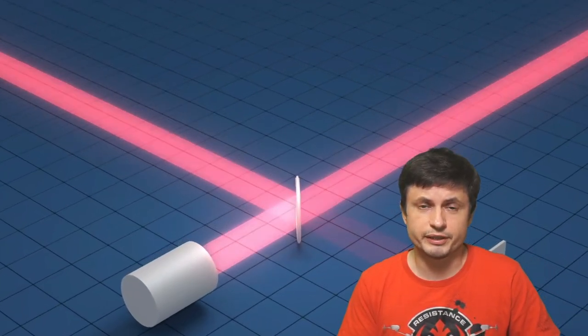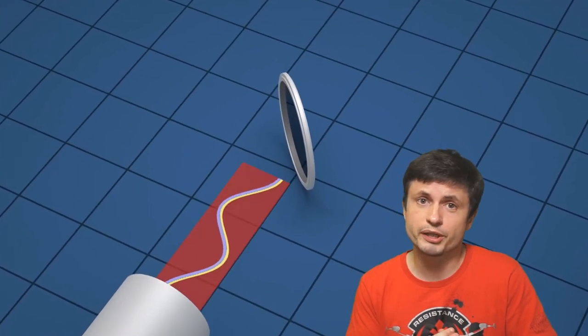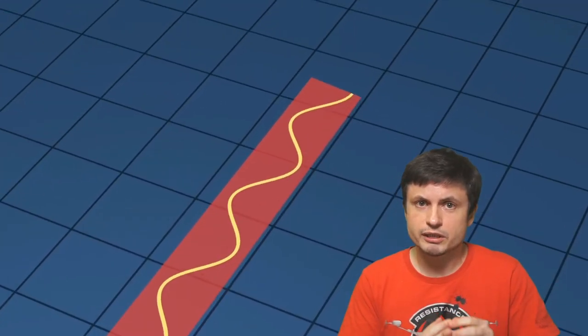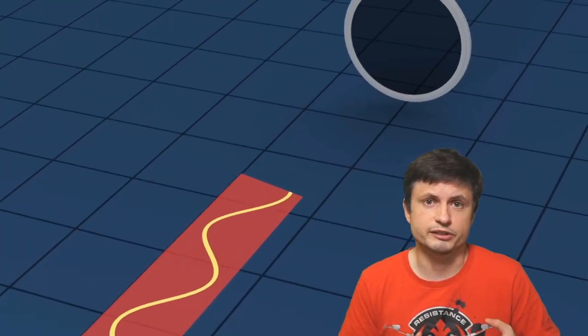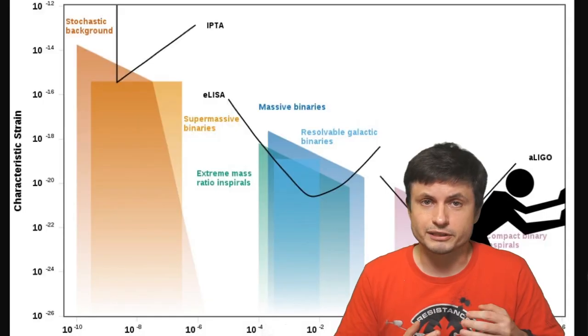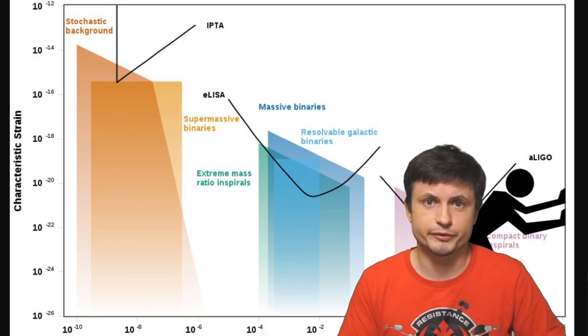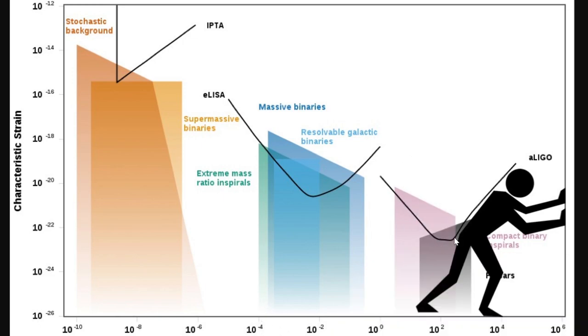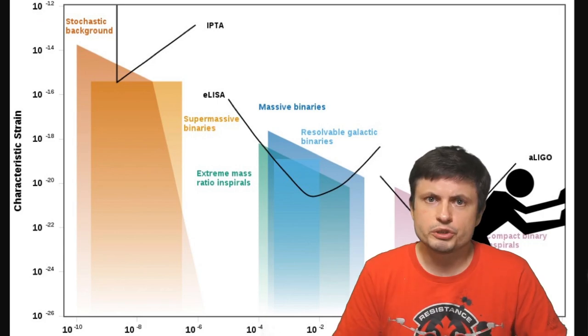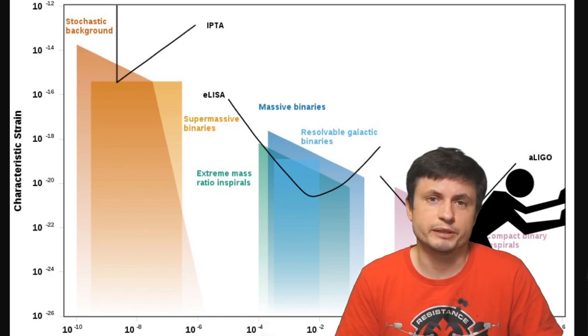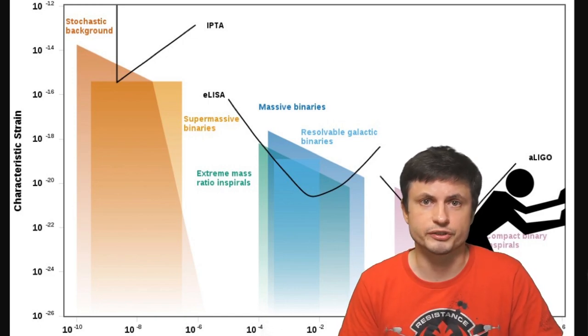And since 2015, many such detections have been confirmed and many such discoveries have allowed us to understand that the universe is full of these different collisions. But LIGO unfortunately is limited to the types of frequencies it can detect. At the moment it's only able to detect frequencies of anywhere between 10 Hz and about 10,000 Hz, which usually corresponds to the collision between solar mass black holes, neutron stars and so on.